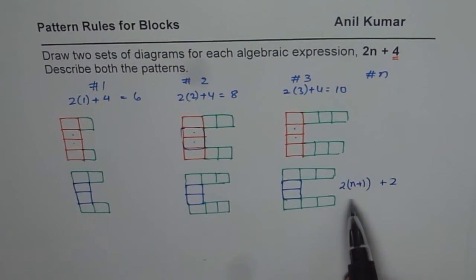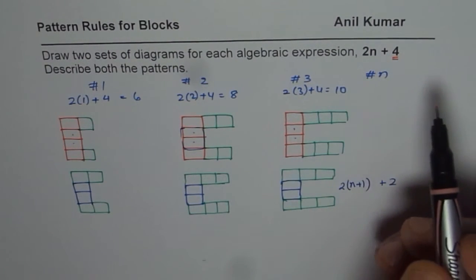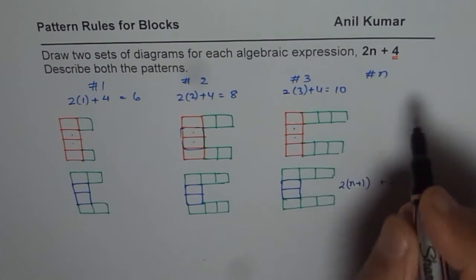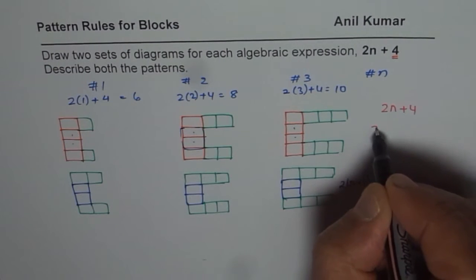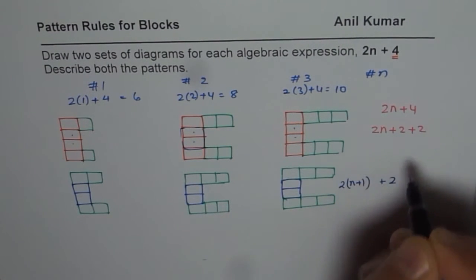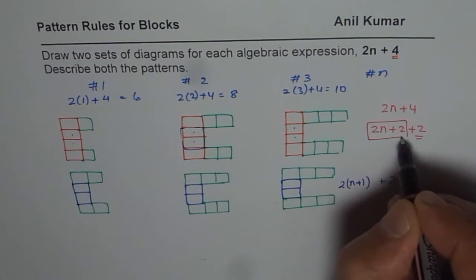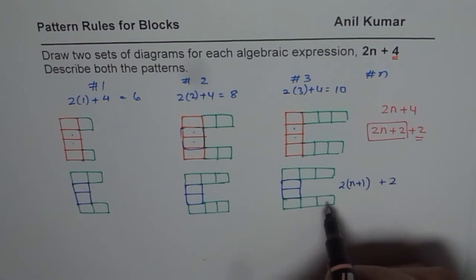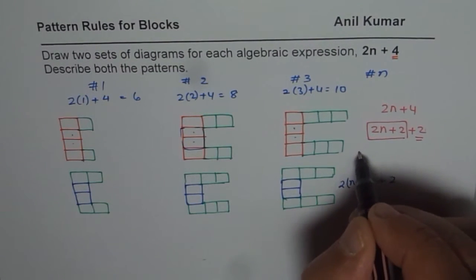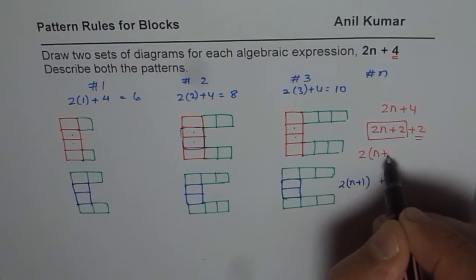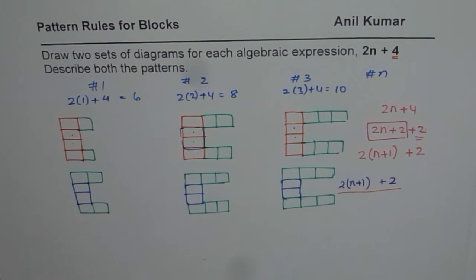Another way is rearranging the formula. 2n + 4 can be written as 2n + 2 + 2. Then 2n + 2 becomes 2(n + 1), so we get 2(n + 1) + 2, which is the same equation.